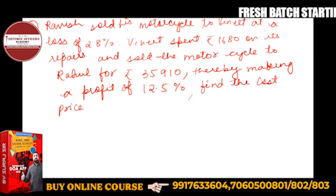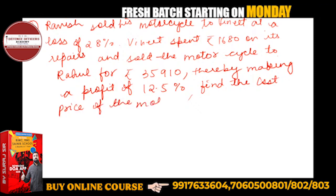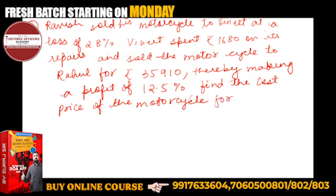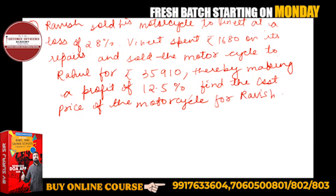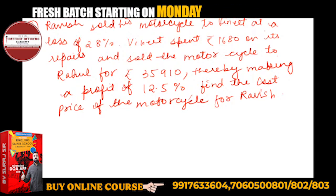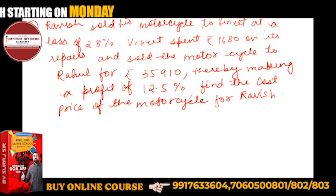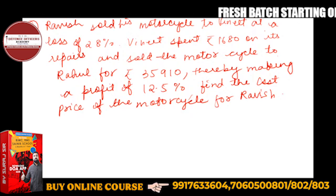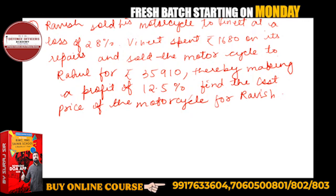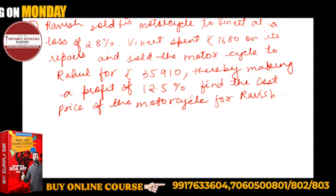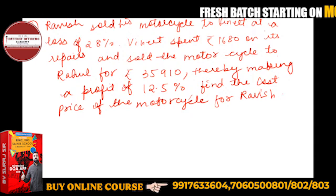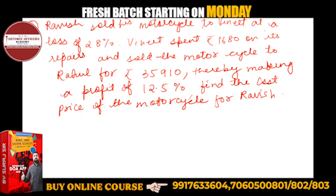It's a very easy question. Let's see who will answer first. So let's understand this question. Ravish sold his motorcycle to Vineet at a loss of 28%. Then Vineet spent 1680 on its repair and sold the motor to Rahul for rupees 35,910.